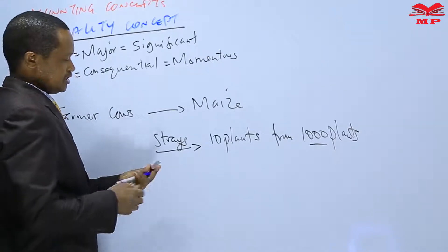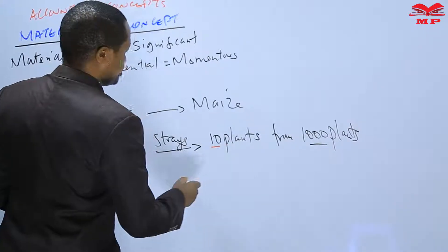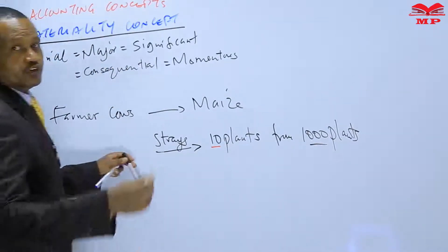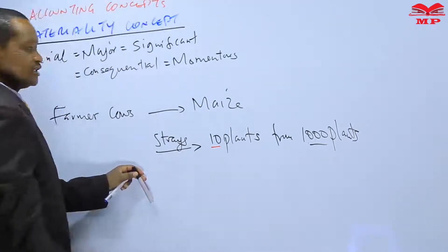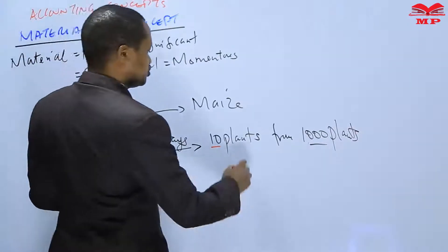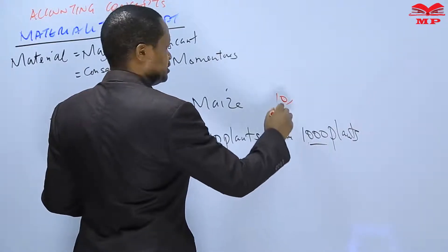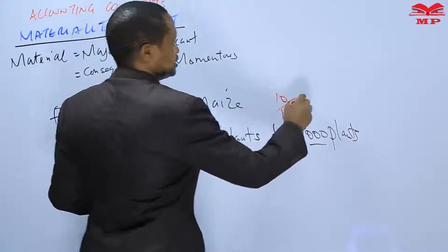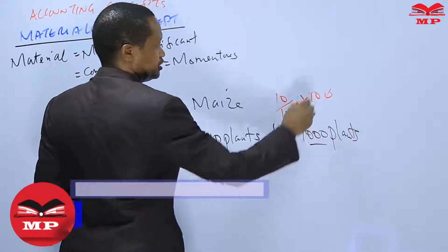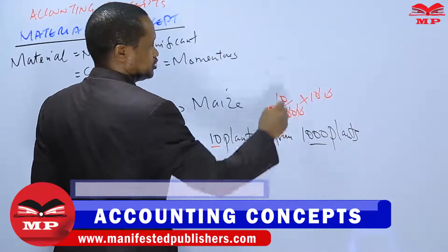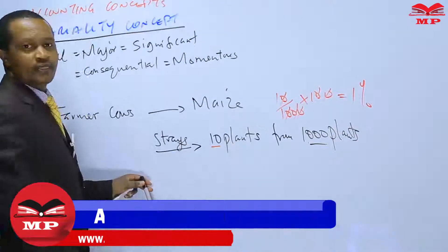Then we can say these ten plants that have been destroyed by your cow are of no consequence, given this total. Because if you are to take the percentage of destruction, this would be ten over a thousand times one hundred, which means your cow has only destroyed one percent.